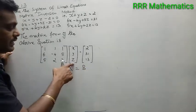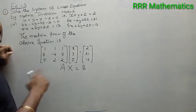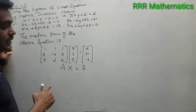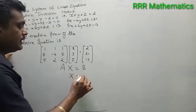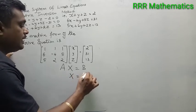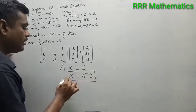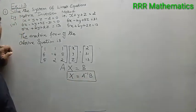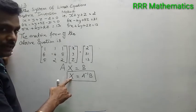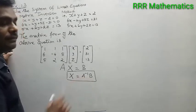We need x, y, z. We have A on the left hand side. Take A inverse on both sides, so A inverse A becomes I. I into x is x. And this is A inverse into b. So to find the value of x, just find A inverse and multiply with b.